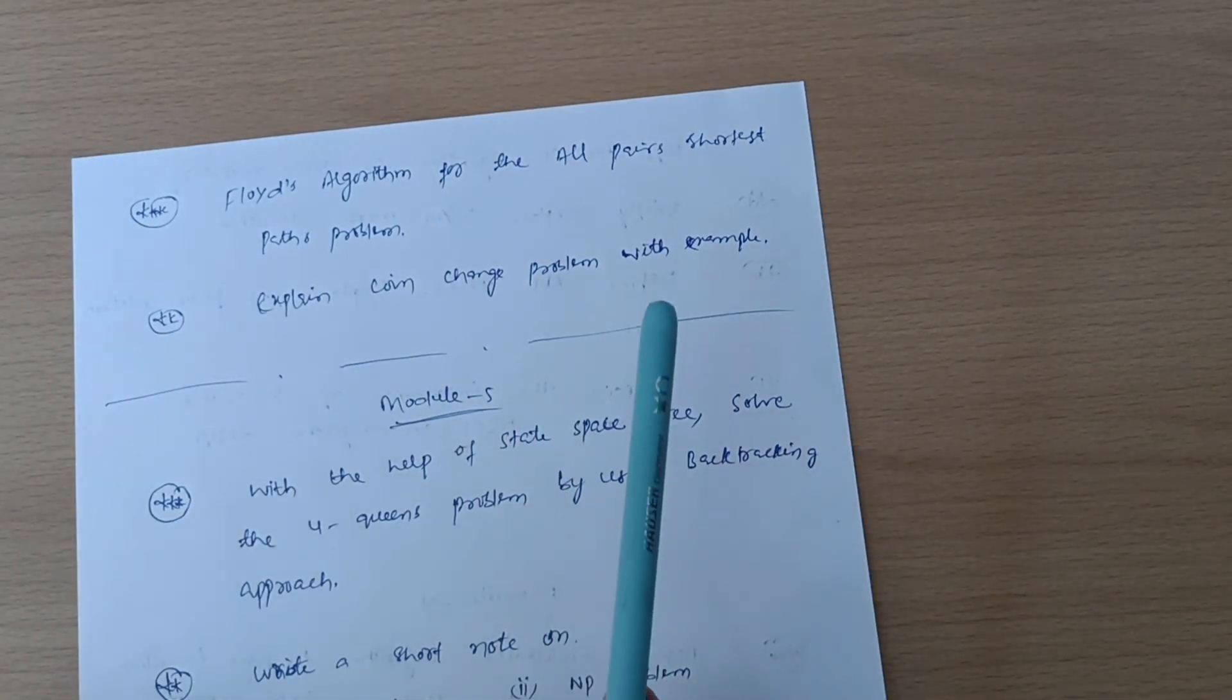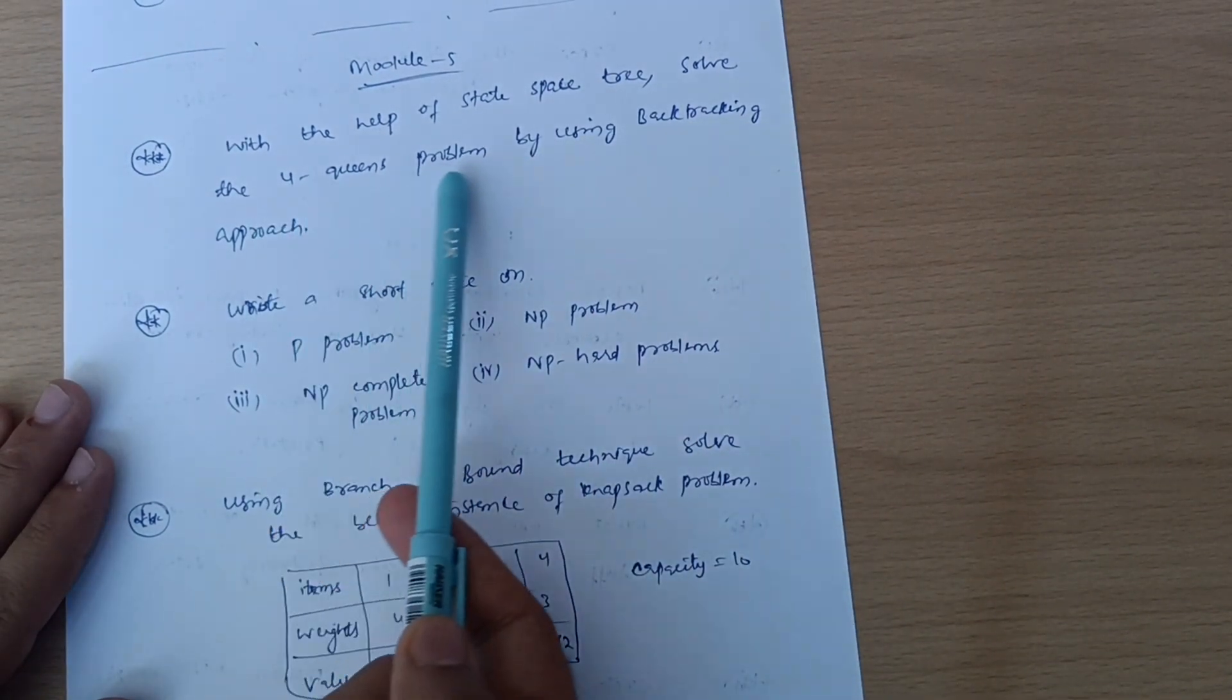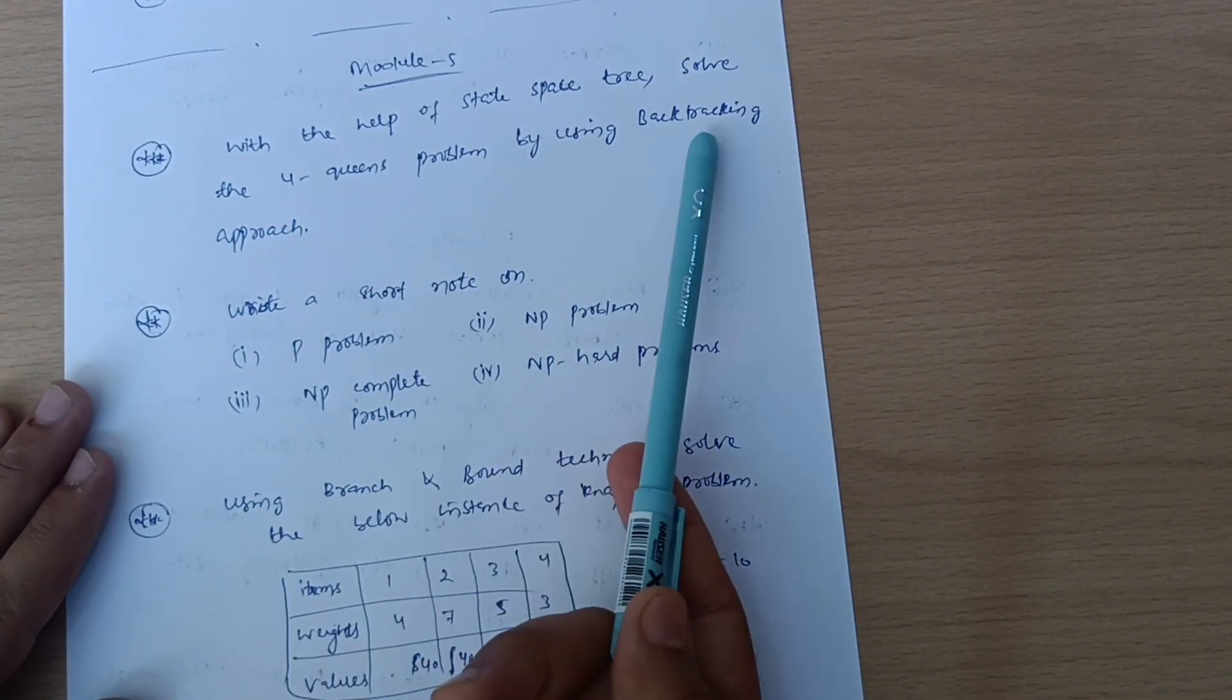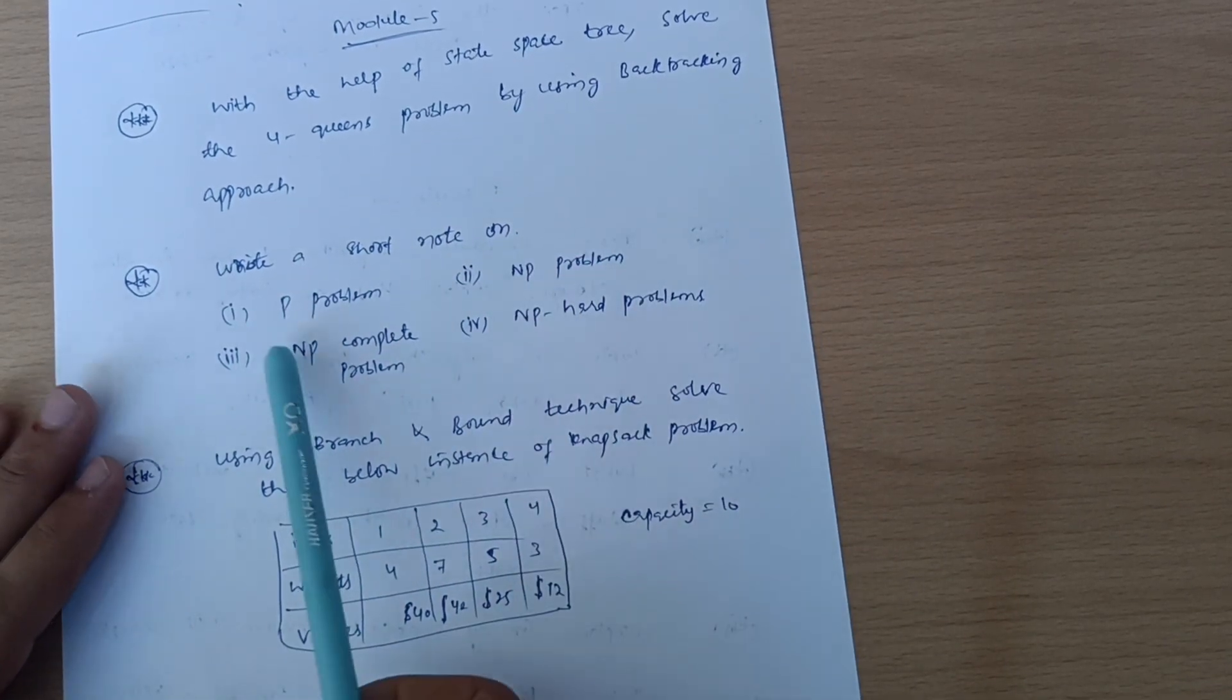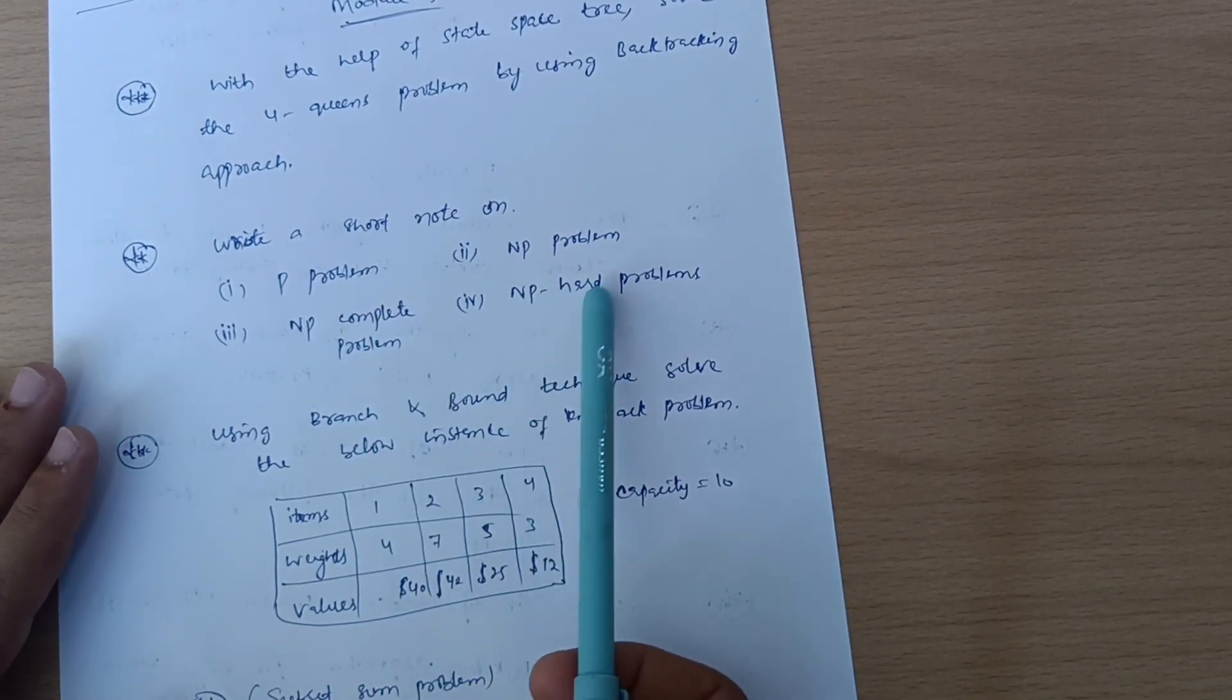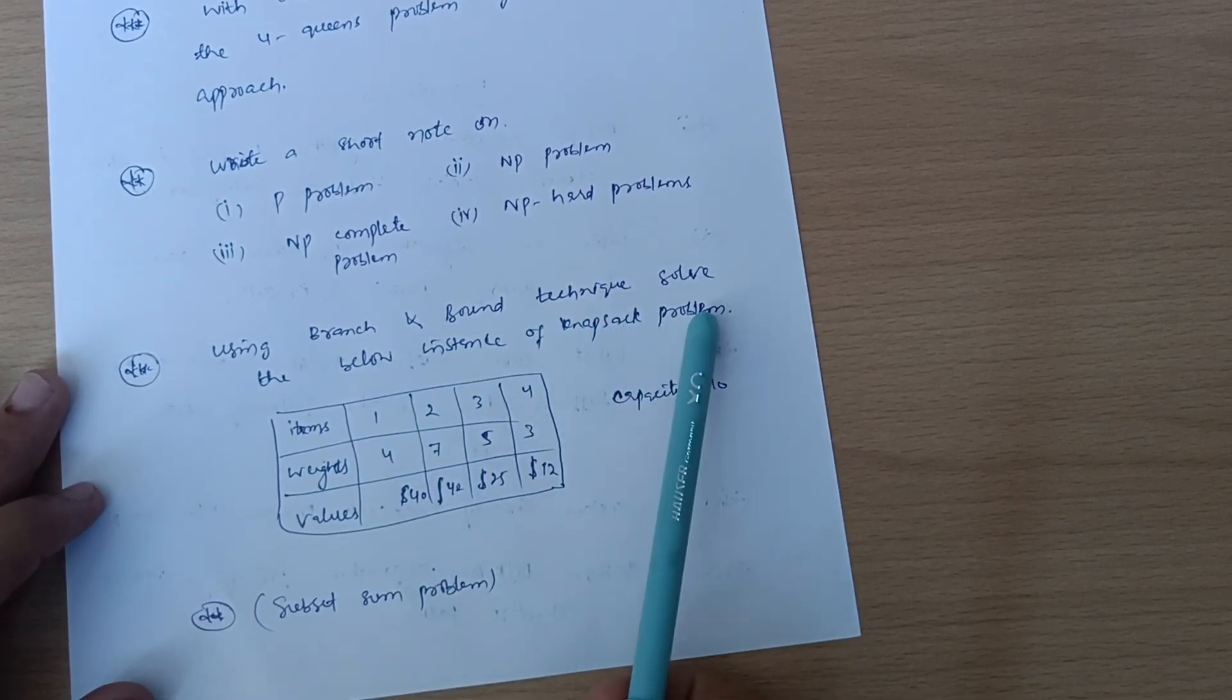Next is Module 5: With the help of state space tree, solve the four queens problem, super important question, by using backtracking approach. Write a short note on P problem, NP problem, NP-complete problem, and NP-hard problem.